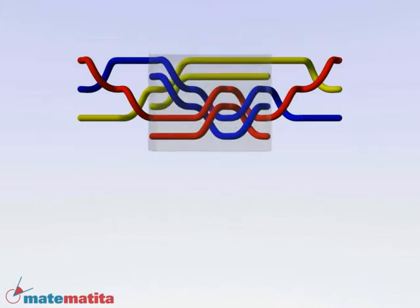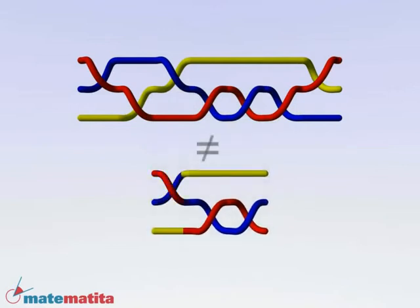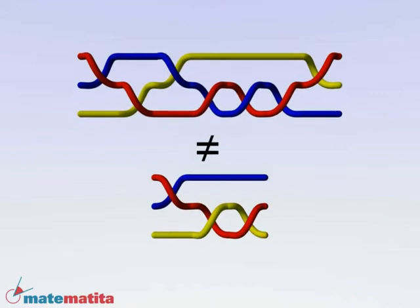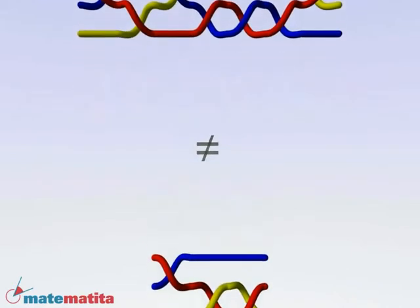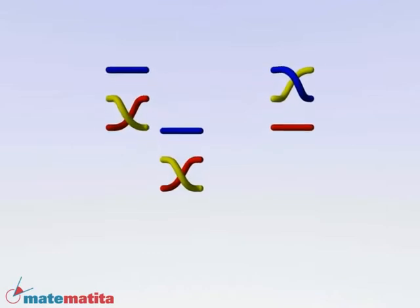On the contrary, two braids can be different and still be conjugated. Here is a simpler example. Two generators of the braid group are surely different braids. But look, they are conjugated.